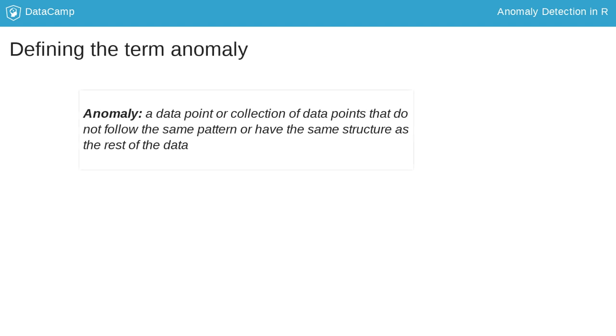An anomaly can be defined as a data point or collection of data points that don't seem to follow the same pattern as the rest of the data. There are a number of different ways in which a data point can differ from the rest of a dataset.